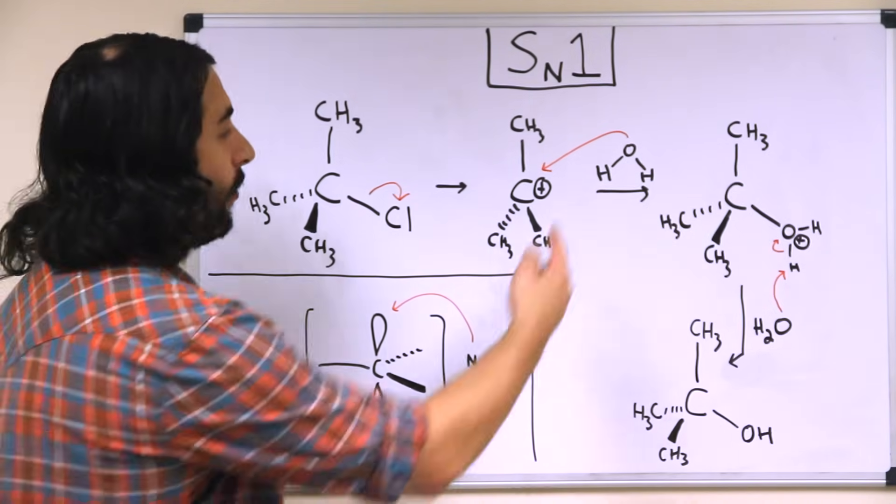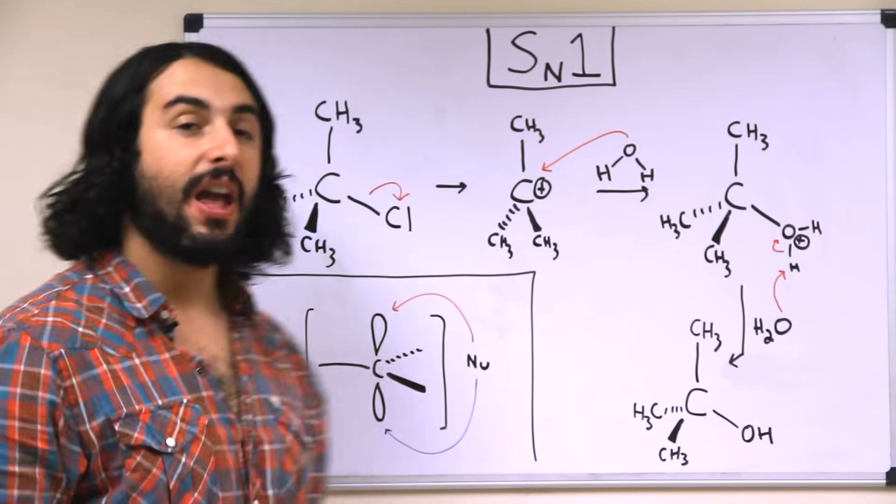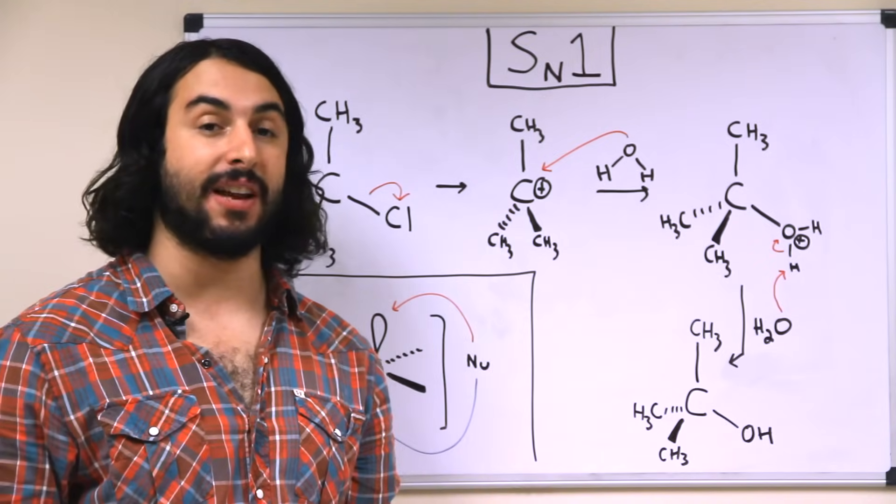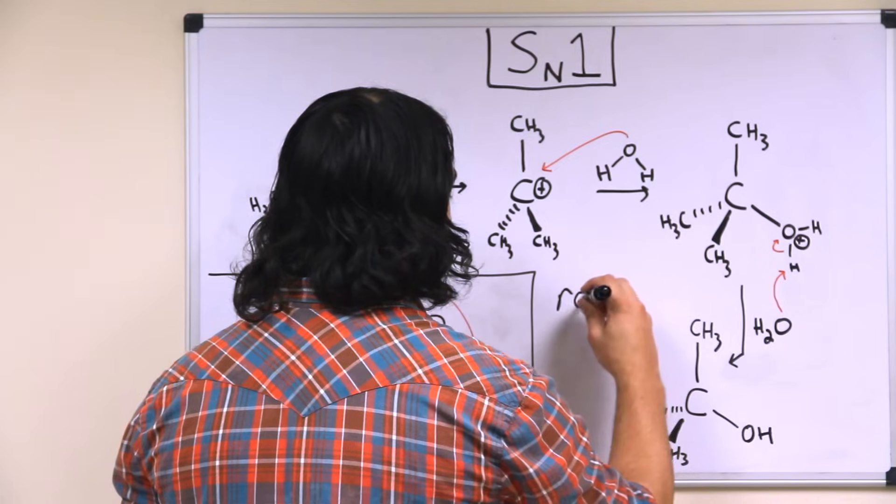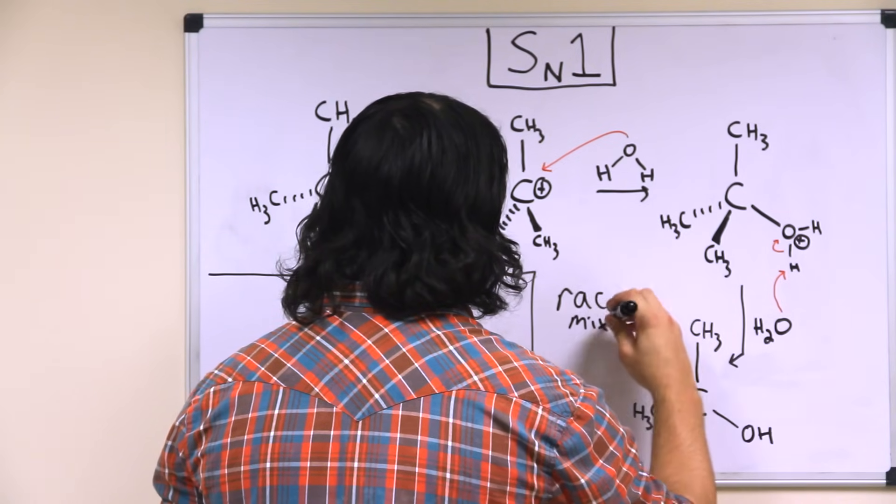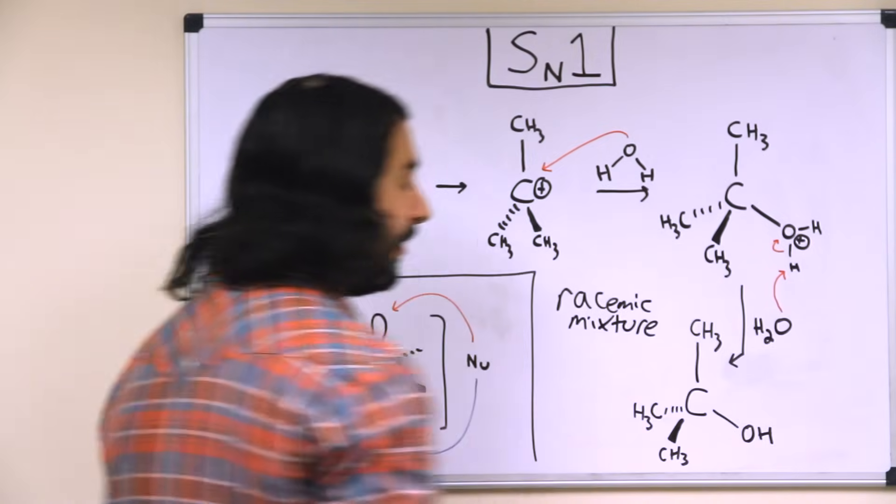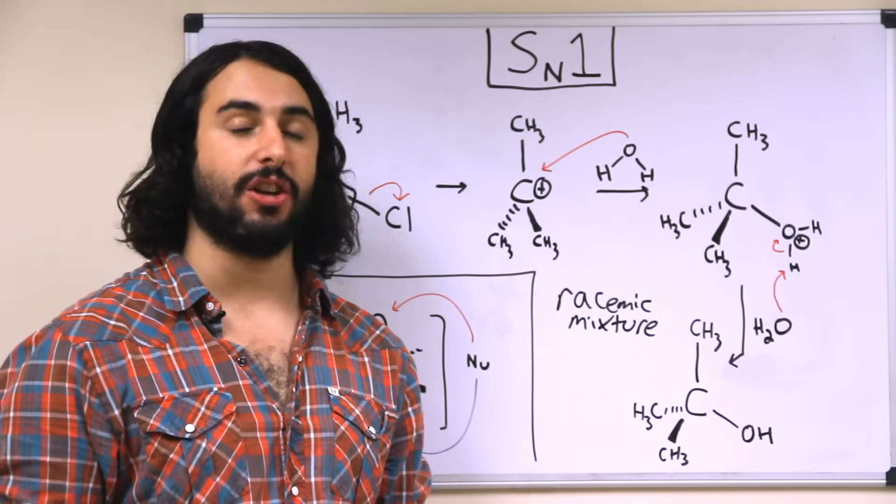So that means that water can attack from this side, or water can attack from that side. And if you are generating a chiral center, you are going to get something called a racemic mixture of enantiomers or of stereoisomers at that location,